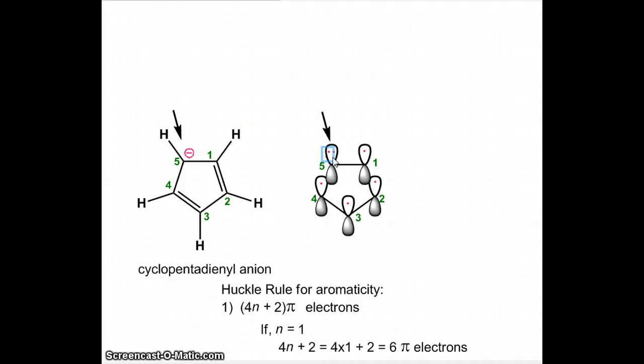Carbon 5 has two electrons in its p orbital. This presence of two electrons is the reason why carbon 5 is shown as a negative charge. Therefore, the total number of electrons in this compound, if you count 2, 3, 4, 5, and 6, there are a total of 6 electrons.